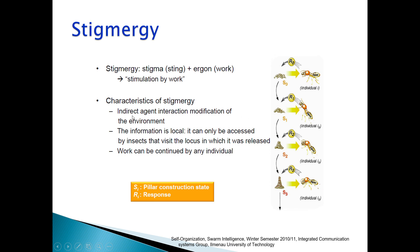Characteristics of stigmergy: indirect agent interaction, modification of the environment; the information is local — it can only be accessed by insects that visit the locus in which it was released; and work can be continued by any individual. Si are the pillar construction states and Ri are the responses. R0, R1, R2, R3 are the responses from individual termites; S0, S1, S2, S3 are the pillar construction states.